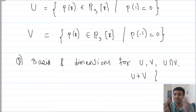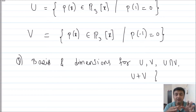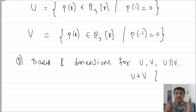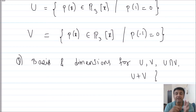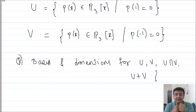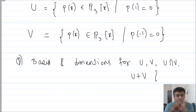U and V are subspaces of P3(x). U consists of those polynomials which have 1 as a root — that is, when you replace x by 1, the polynomial equals zero. V consists of those polynomials which have minus 1 as a root. The question asks you to find the basis and dimension for U, V, U∩V, and U+V.